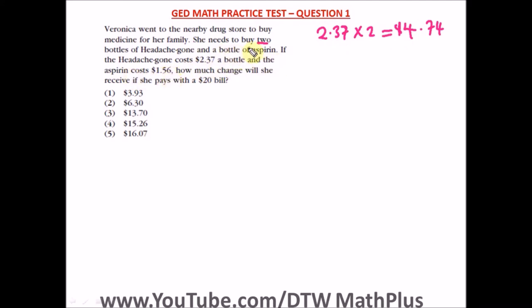And the next is aspirin. She's just getting one bottle of aspirin and it costs $1.56, so let's add $1.56 to the total cost of the two bottles of headache gun. We have here 1.56. If you add this up together we should have a total of $6.30.